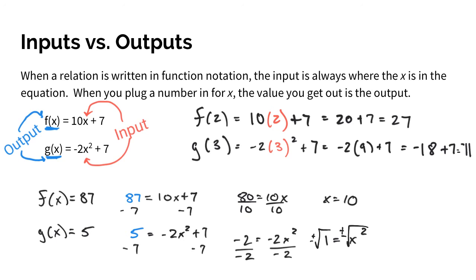Because in here, our solutions could either be x equals 1 or negative 1 for our answers. And those are the two inputs in this scenario that give you that one single output of 5.